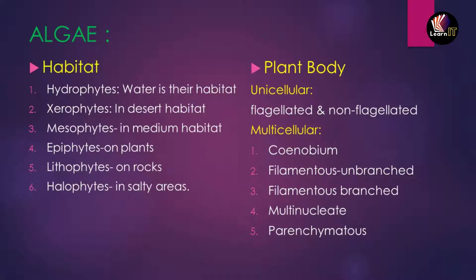Moving to plant body: algae can be unicellular or multicellular. Unicellular algae can be flagellated or non-flagellated. Among multicellular forms, a coenobium is a colony with a fixed number of cells and division of labour — for example, Volvox. Algae can also be filamentous (unbranched or branched), multinucleated, or parenchymatous.